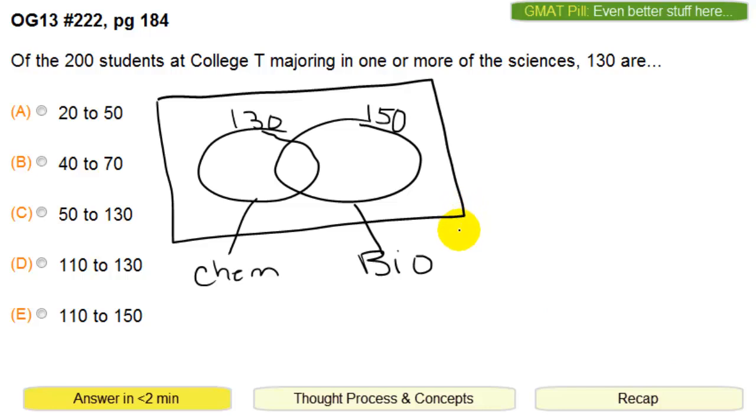So if at least 30 of them are in neither one, that means they're in the outside box. So that means this area has at least 30. Then it says, okay, then the number of students majoring in both, that means this area. So how many of them are in here? That's the final question.